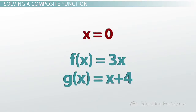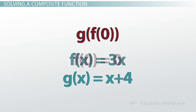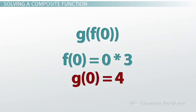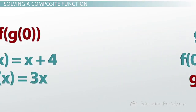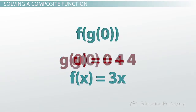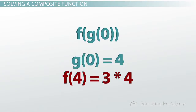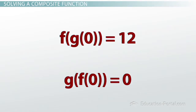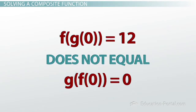Let x equal 0. Then g of f of 0: f of 0 is 0 times 3, which is 0, so we evaluate g of 0, which gives 4. Now f of g of 0: g of 0 is 4, so we evaluate f of 4, which gives 12. Since 4 does not equal 12, g of f of x does not equal f of g of x.